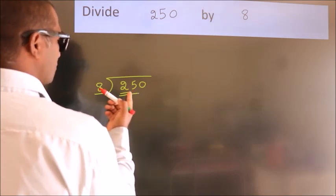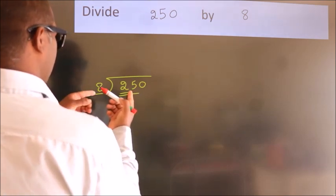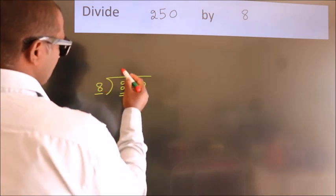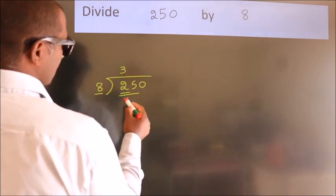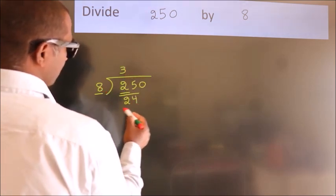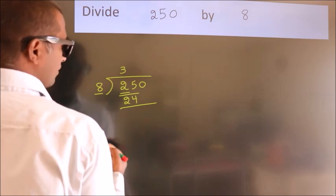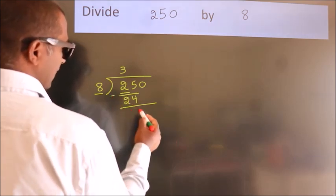A number close to 25 in the 8 table is 8 threes, 24. Now we should subtract. We get 1.